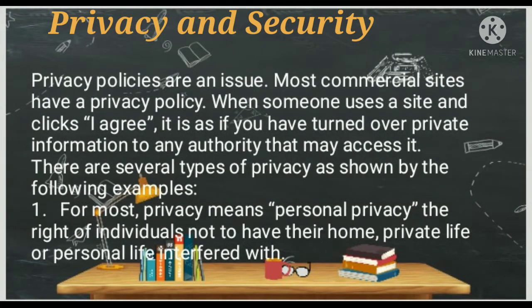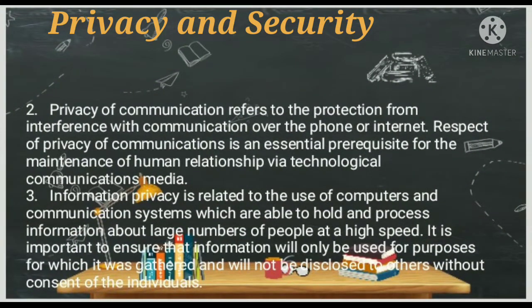Privacy and security: privacy policies are an issue. Most commercial sites have a privacy policy. When someone uses a site and clicks 'I Agree,' it is as if you have turned over private information to any authority that may access it. There are several types of privacy. First, for most, privacy means personal privacy — the right of individuals not to have their home, private life, or personal life interfered with. Second, privacy of communication refers to protection from interference with communication over the phone or internet; respect for privacy of communications is an essential prerequisite for the maintenance of human relationships via technological communications media. Third, information privacy is related to the use of computers and communication systems, which are able to hold and process information about large numbers of people at high speed. It is important to ensure that information will only be used for purposes for which it was gathered and will not be disclosed to others without consent of the individuals.